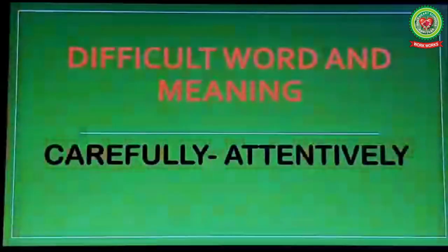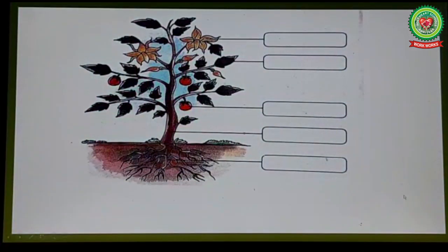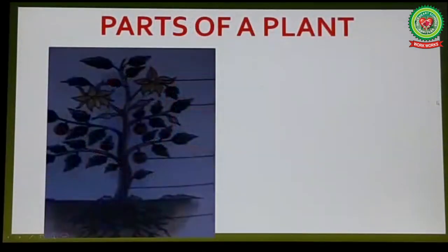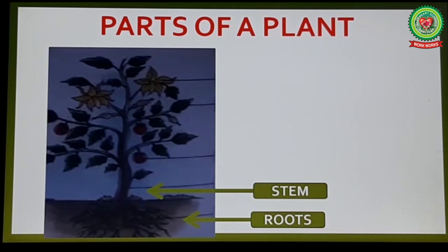Underline the word 'carefully' and write its meaning: attentively. Now look at this picture. Number one, these are roots and they grow under the ground. Next, this is the stem — it is a long part of a plant which bears leaves, fruits, branches, etc.